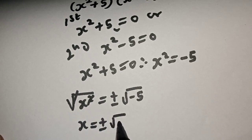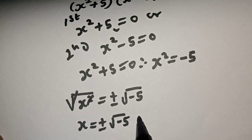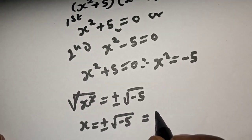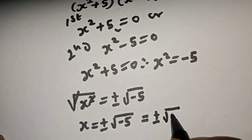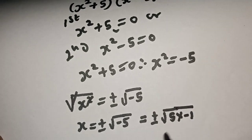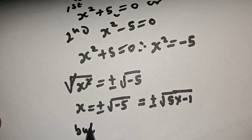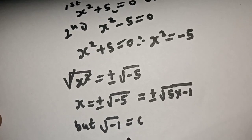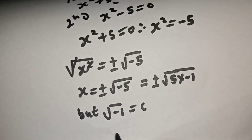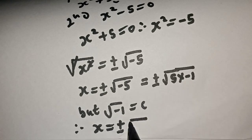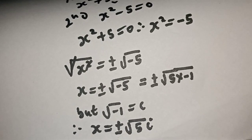s is equal to plus or minus the square root of minus 5. This is equal to plus or minus the square root of 5 multiplied by the square root of minus 1. But the square root of minus 1 is equal to i. Therefore s is equal to plus or minus square root of 5 times i.